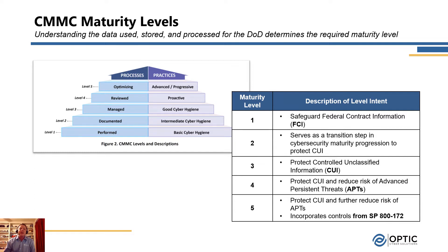In addition to having the five-point scale across processes, the practice maturity also increases as you go up the scale. At level one, you're starting at basic cyber hygiene. At level three, you have good cyber hygiene, all the way up to level five, where you have an advanced or progressive cybersecurity program.